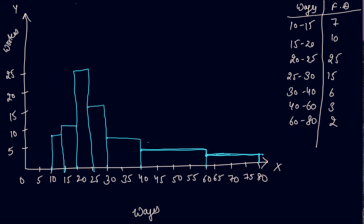So with this we find out the histogram when given unequal class intervals — showing frequency densities of 7, 10, 27, 15, 6, 3, and 2. For example, from 60 to 80 the actual frequency was 8, and 8 divided by 4 = 2. From 40 to 60 the actual frequency was 12, divided by 4 = 3. We are actually representing the exact frequencies through frequency density. I hope you have understood the histograms. Do download our learning app and enjoy the learning experience with us.